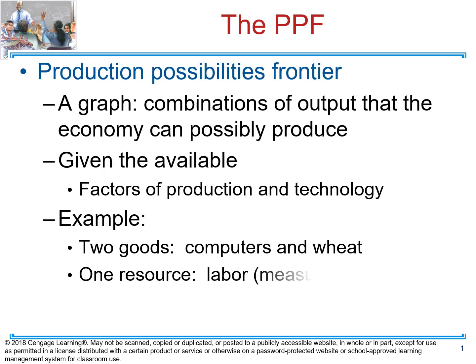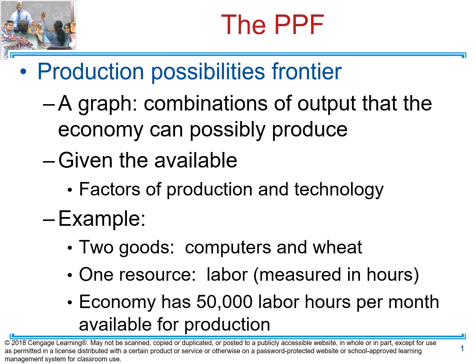We continue with Chapter 2. The next model we're going to study in this chapter is the Production Possibilities Frontier. Production Possibilities Frontier is a graph that shows us the combination of two goods that an economy can produce, taking into consideration available resources. The key word here is 'can' — not that we have to produce, or want to produce, or might produce.